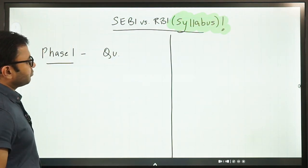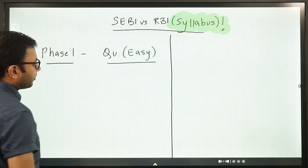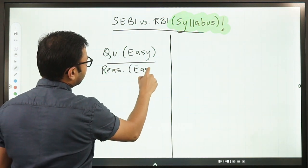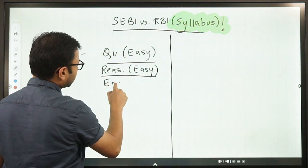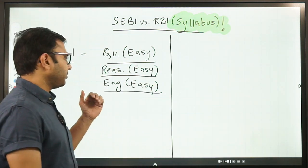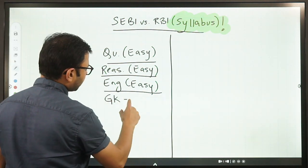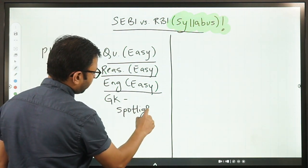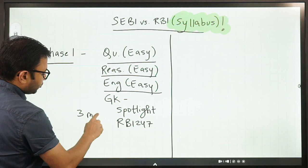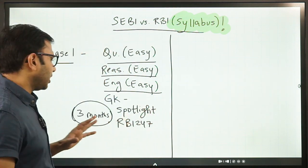If we talk about phase one, the first subject that you have is quant or maths, which is of an easy level. Now, this is where it differs from RBI. The second one is reasoning, which is also of an easy level. And the third is English, which is also of an easy level. When we talk about the fourth and last element, that is GK or general awareness, you need to cover two magazines to be thoroughly prepared: Spotlight and RBI 247. A maximum of three months coverage is enough because there are only 20 questions asked in SEBI examination.